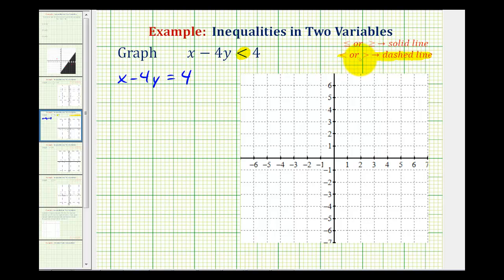The dashed line means the line is not going to be part of the solution. If we had a less than or equal to or greater than or equal to inequality symbol we would make a solid line because the line would be part of the solution. So we can't forget this has to be a dashed line.